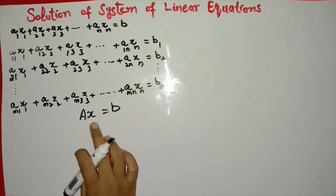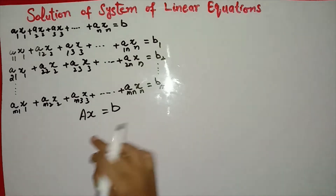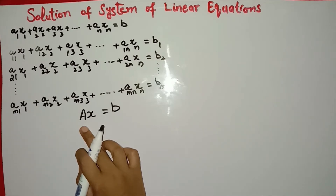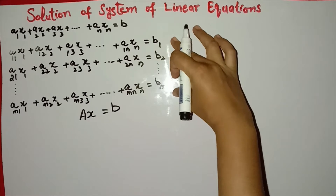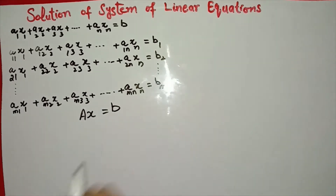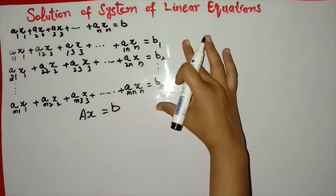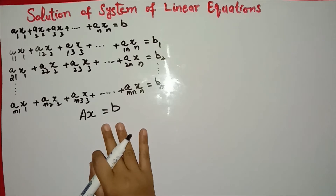We represent the system of linear equations in matrix form. Here we have A, X, and B. A has the coefficients — it is the coefficient matrix. X is a column matrix of variables, and B is a column matrix of constants. We write the system in the form AX = B and then apply different solution methods.